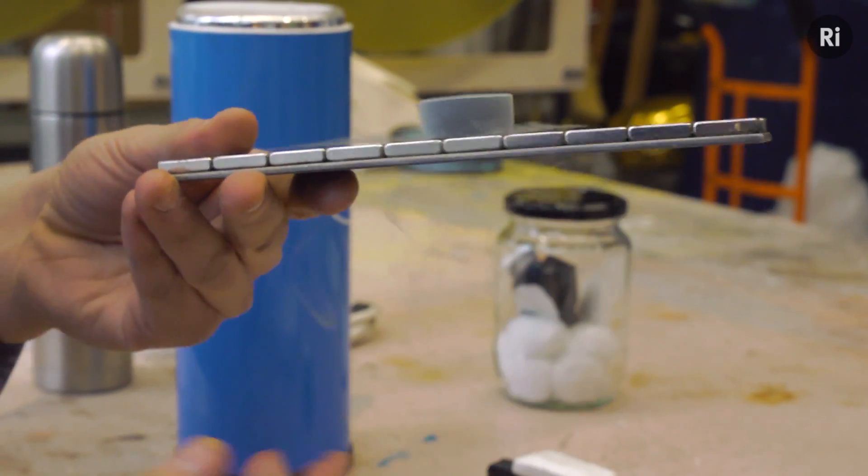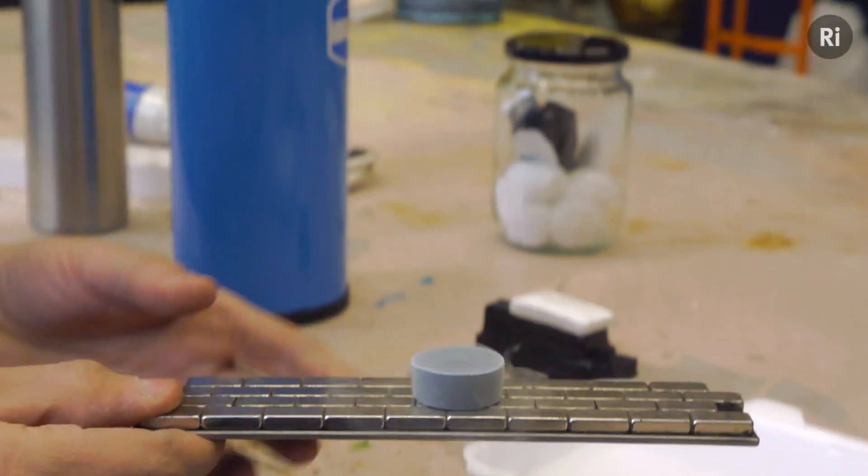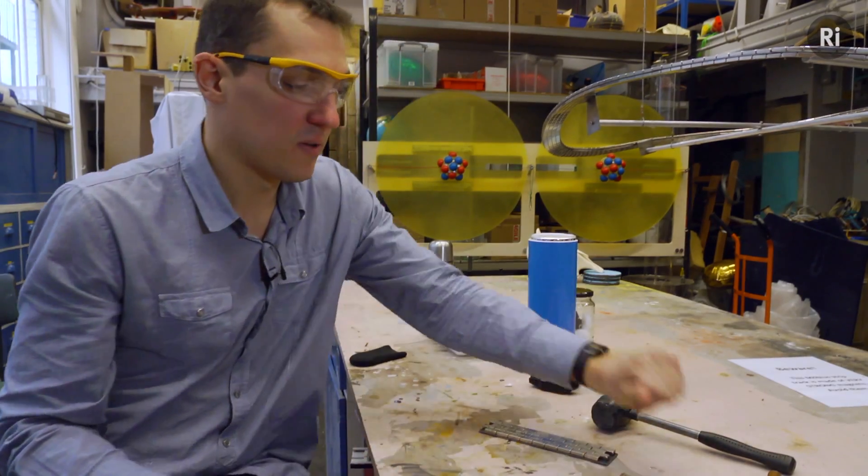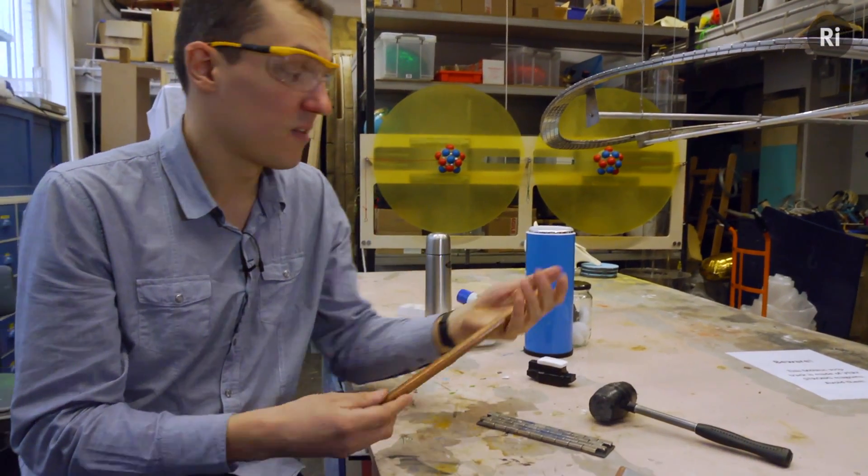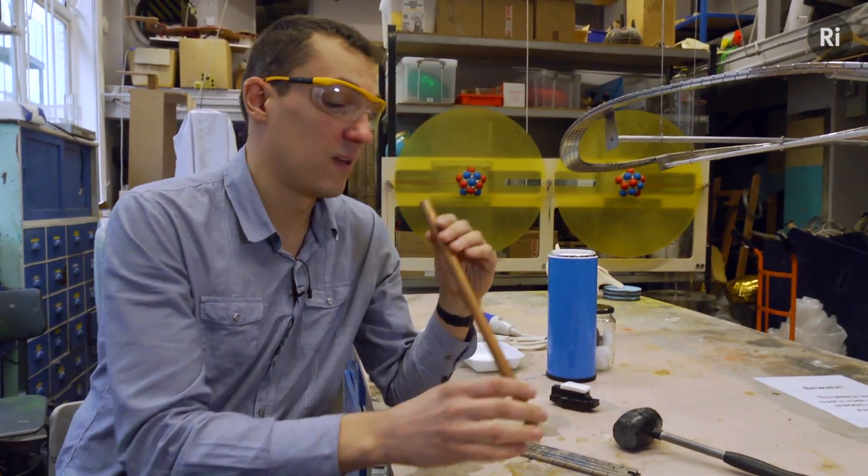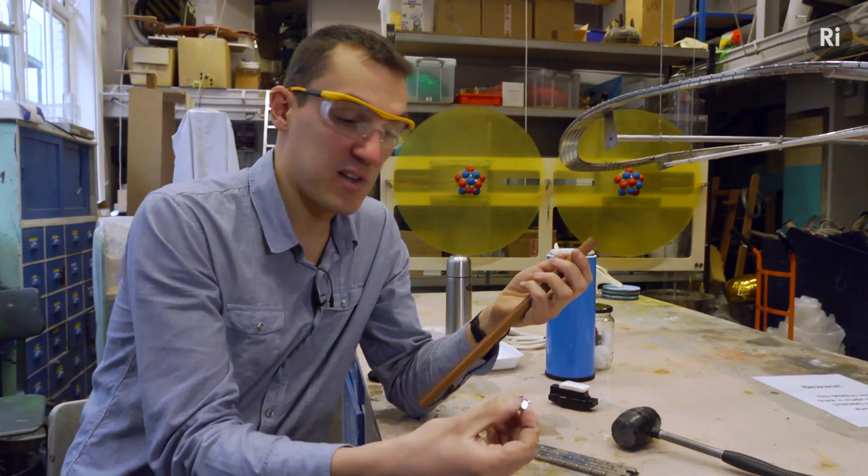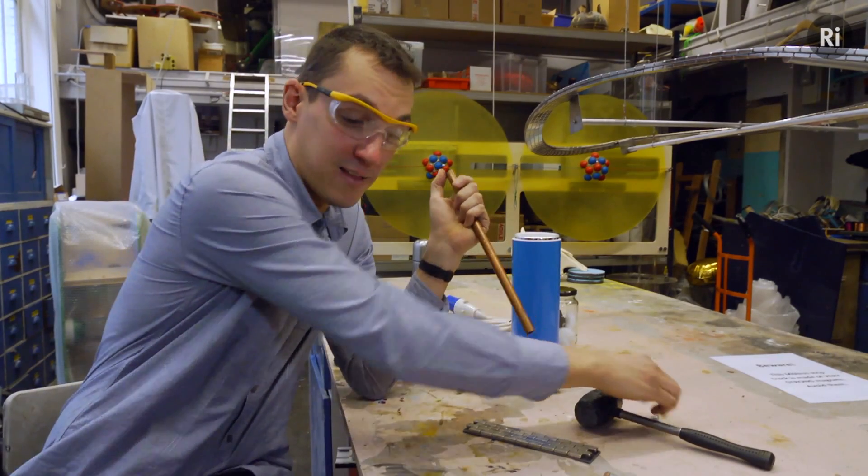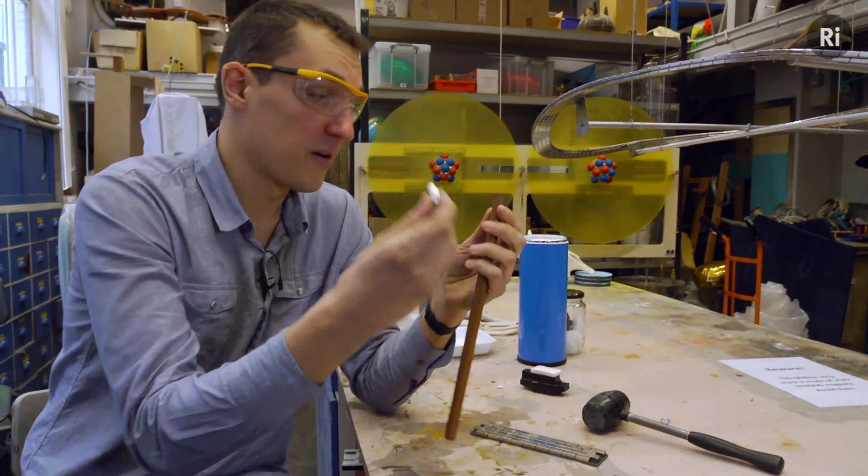What's actually going on there? A good way to start to understand that is to think about how magnets interact with ordinary conductors like this copper tube. If I just drop this nut through, it falls all the way through very quickly as you'd expect. If I drop a strong magnet through instead...